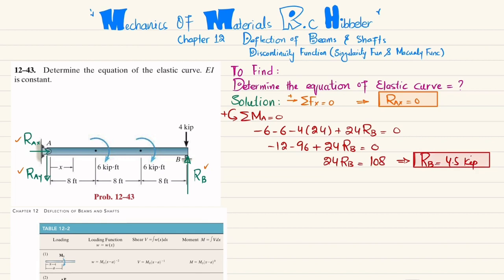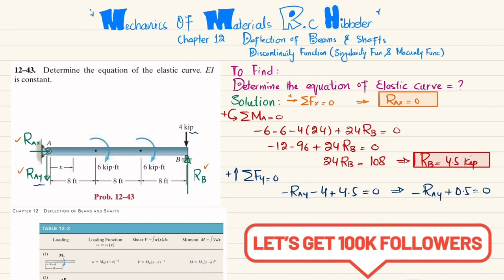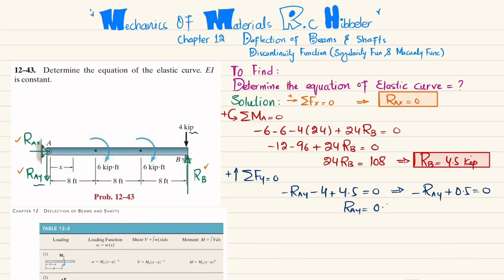Now we find R_AY using the sum of all forces along the y-direction equal to zero, taking upward as positive. We write: −R_AY − 4 + R_B = 0, so −R_AY − 4 + 4.5 = 0, giving R_AY = 0.5 kips. The positive result confirms the downward direction we assumed was correct.